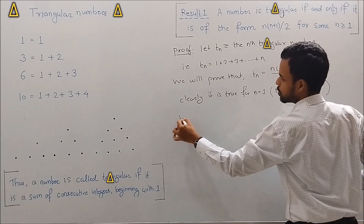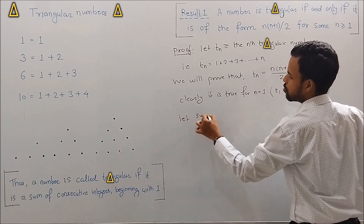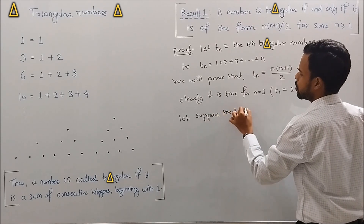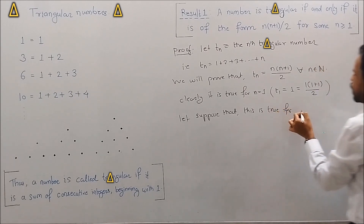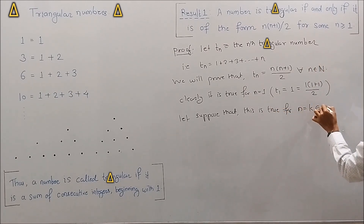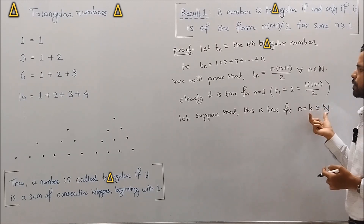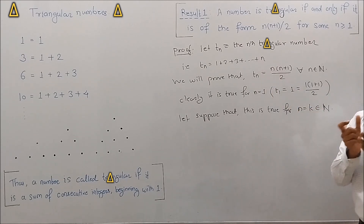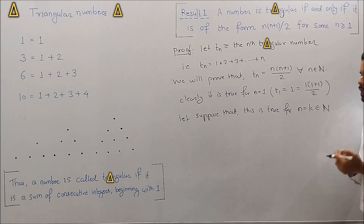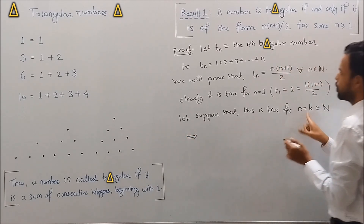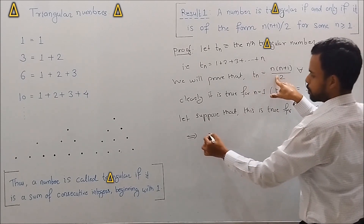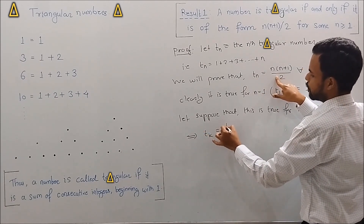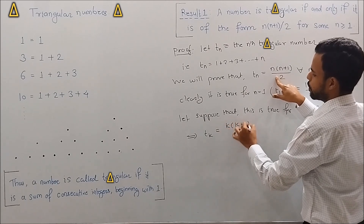Now let's suppose that this is true for n = k, where k belongs to the set of natural numbers. That is, we assume this result holds true for some positive integer k. This gives us T_k = k(k+1)/2.